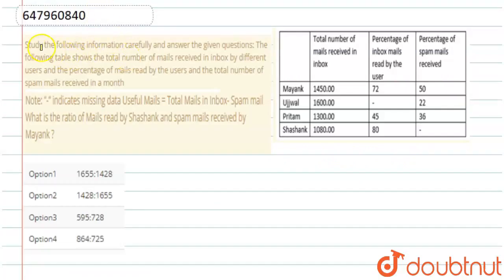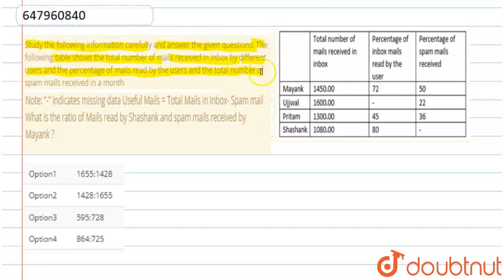Welcome to DoubtNet. Our question is: study the following information carefully and answer the given question. The following table shows the total number of mails received in inbox by 5 different users, the percentage of mail read by the users, and the total number of spam mail received in a month. Note that a dash indicates missing data. Useful mail equals total inbox mails minus spam mail.